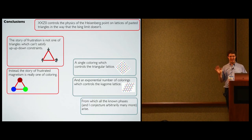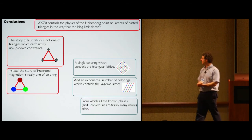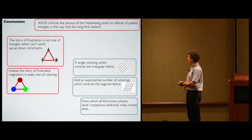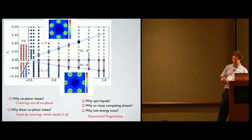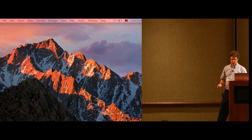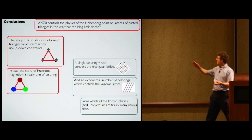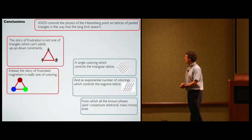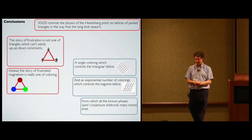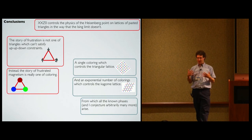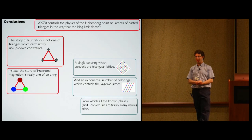In conclusion, we've taken this Hamiltonian, diagonalized it on Blue Waters, and found this exponentially degenerate ground state. We've been able to connect it to some cool spin liquids. That is what we know.